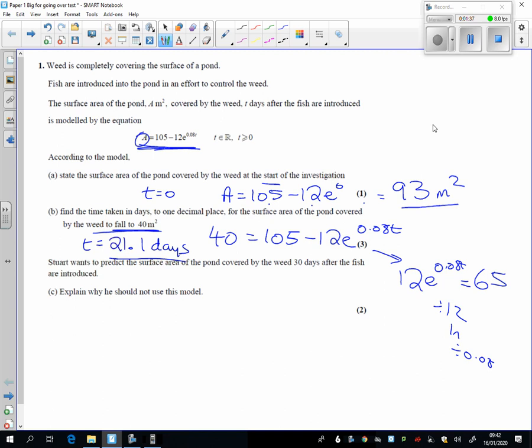Part C, it says something's going to happen at 30 days, explain why I should not use the model. So, let's find out what's going to happen at t equals 30, and a equals 105 minus 12, e to the 0.08t times 30, and when you tap all of that in,